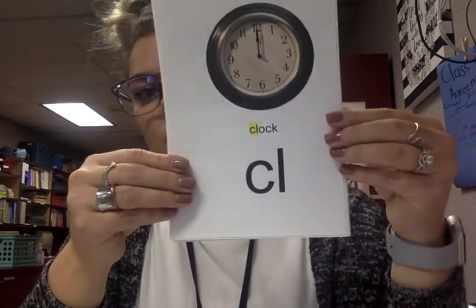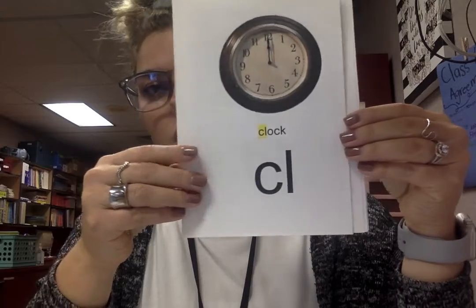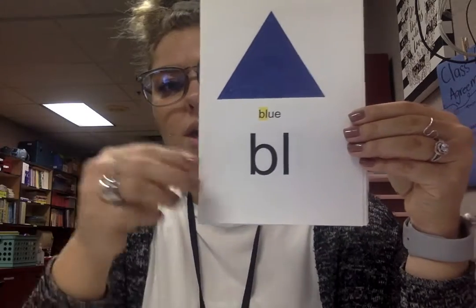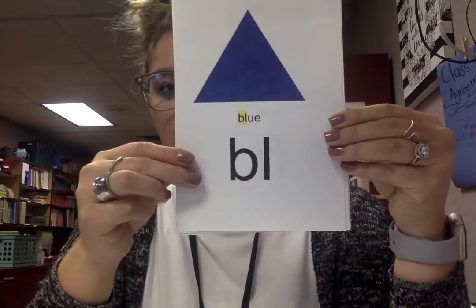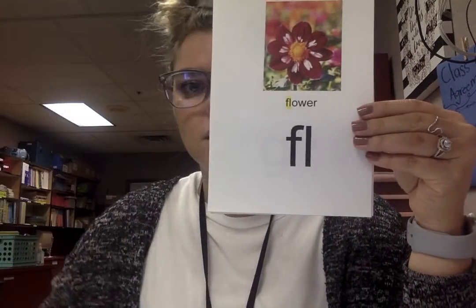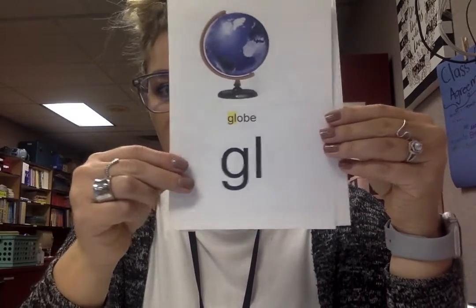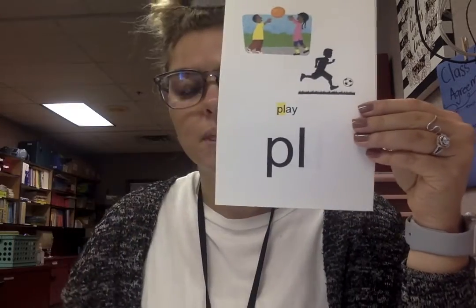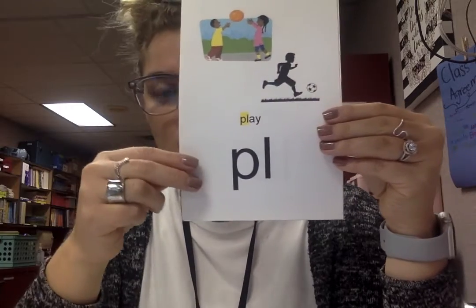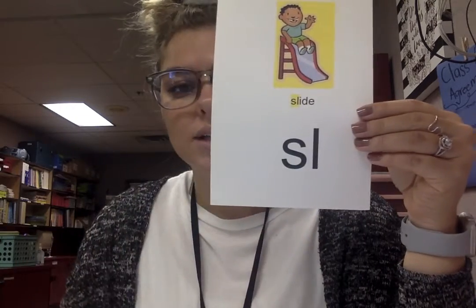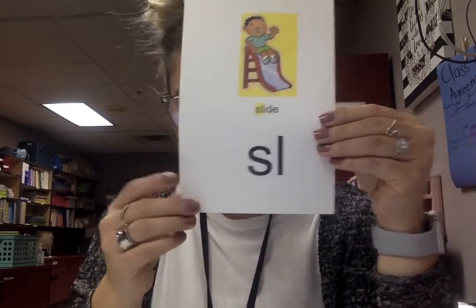We're going to do our L blend. You need to say the letter and then say the sound. C-L — cool. B-L — bull. F-L — full. G-L — goal. P-L — pull. S-L — soul.